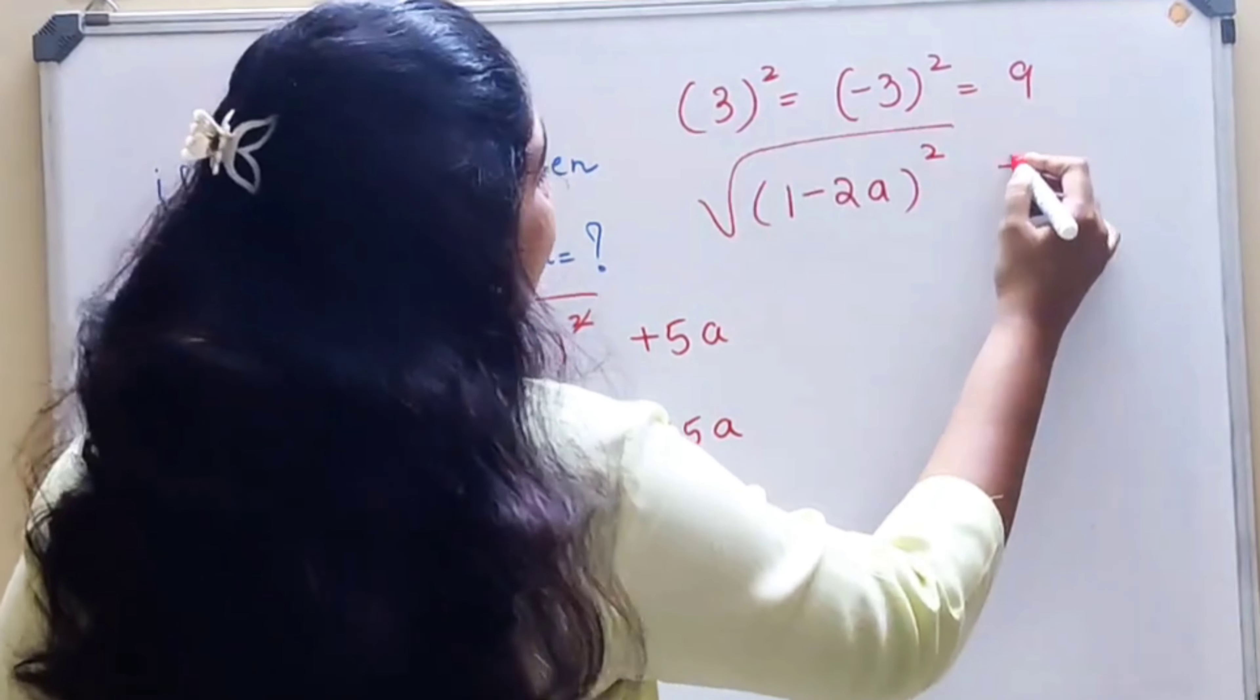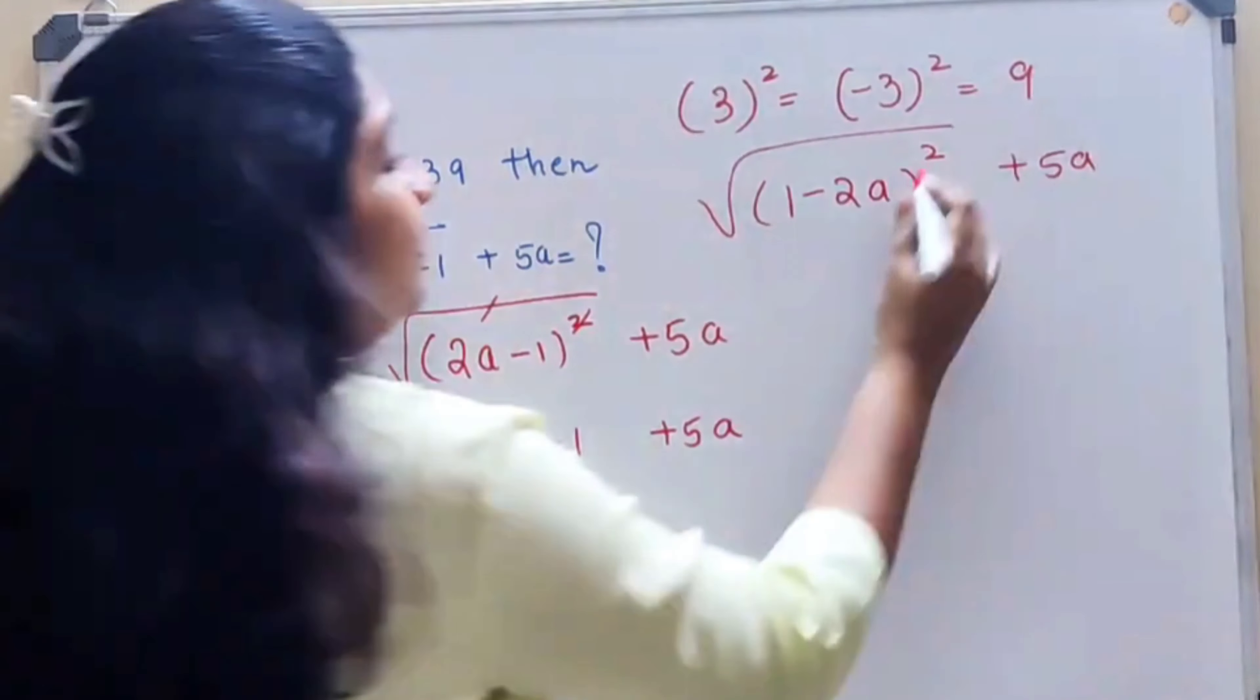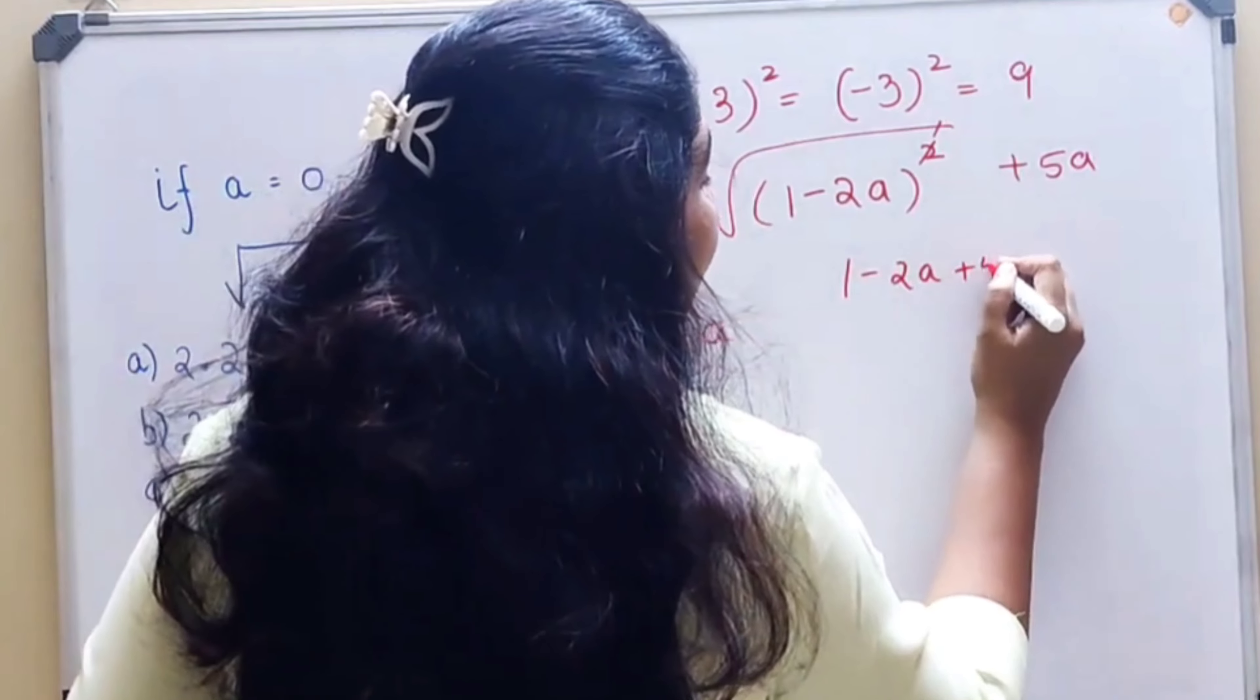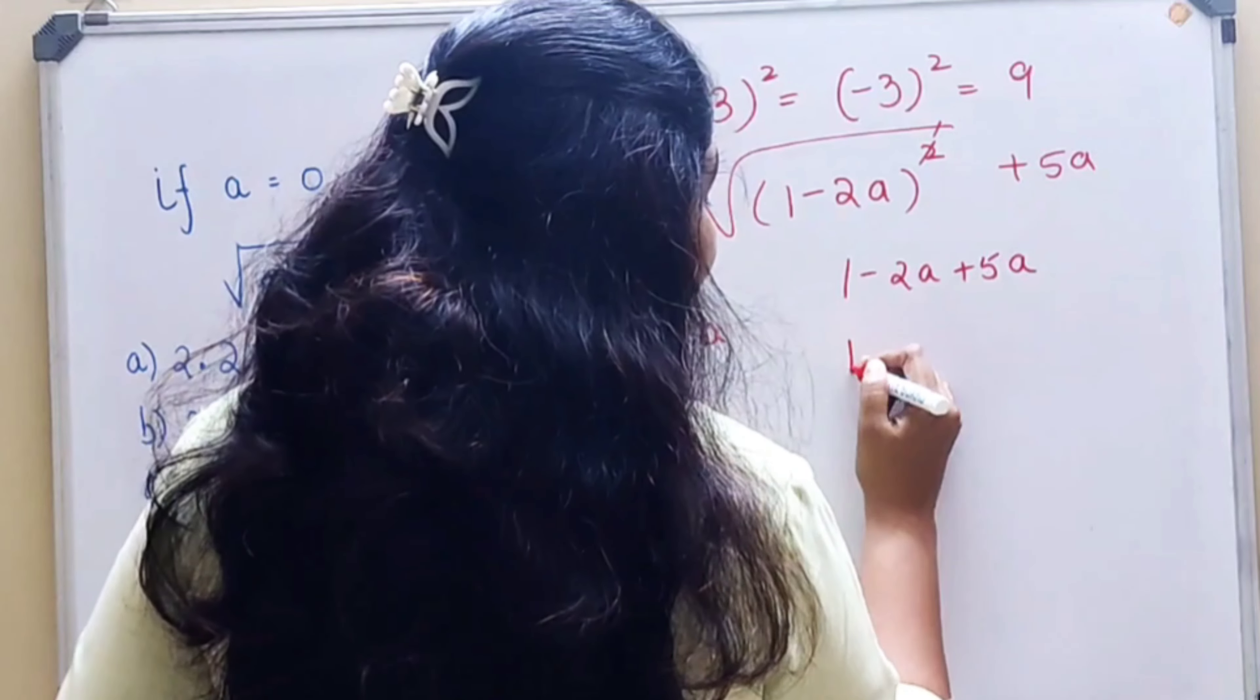You put this under the root and there is a +5a. Let's try and solve for this one. So here this cancels, so we have 1 - 2a + 5a. So this can be written as 1 + 3a.